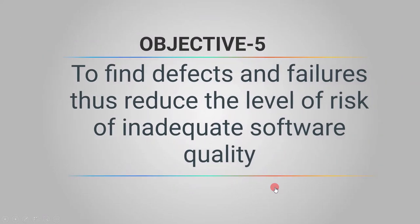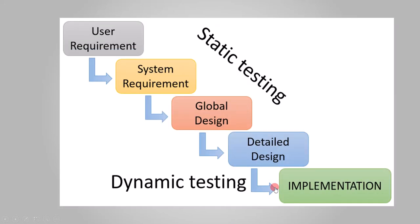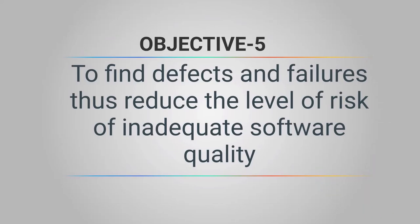The fifth objective is to find defects and failures, thus reducing the level of risk of inadequate software quality. The output of the requirement stage is the requirement document. If we find defects or failures at this stage, we can reduce the defects at subsequent stages, improve the quality of the software, and reduce the level of risk of inadequate software quality.